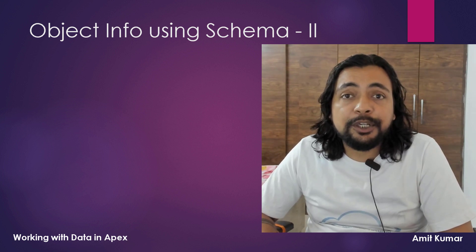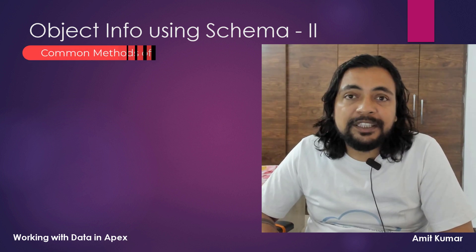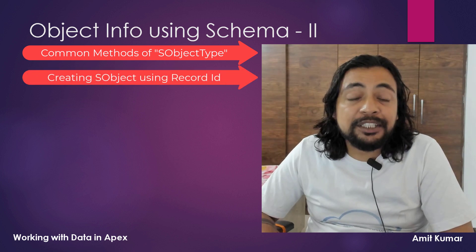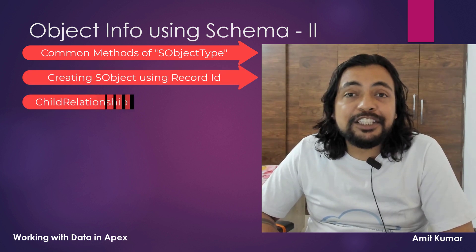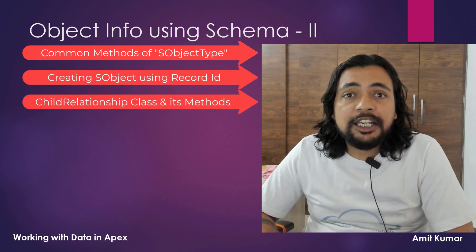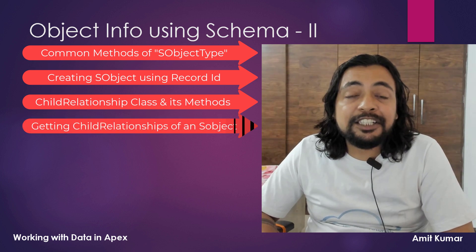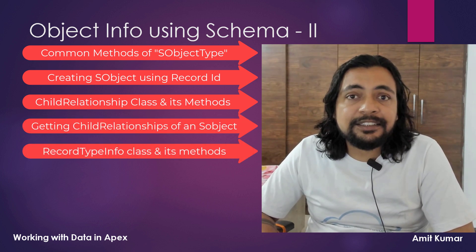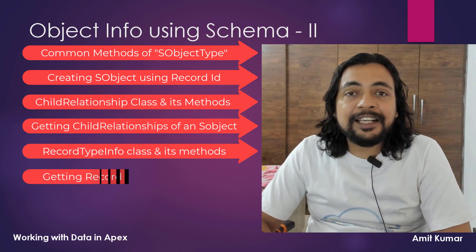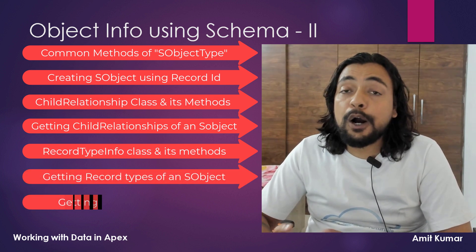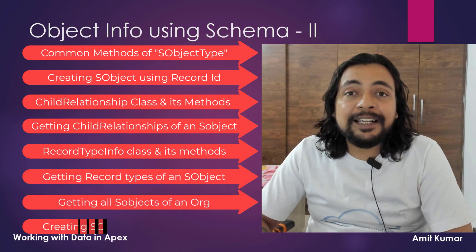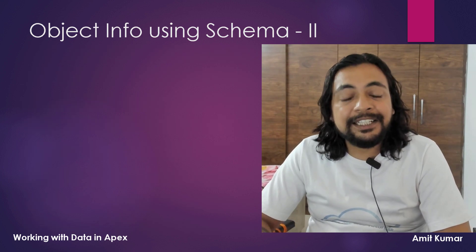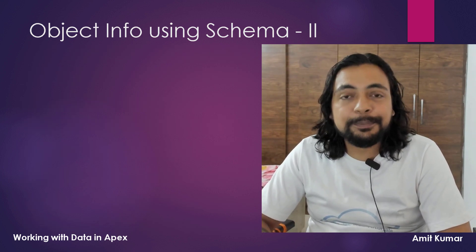Topics we will cover in this video are: common methods of SObjectType class, creating SObject using record ID, ChildRelationship class and its methods, getting child relationships of an SObject, RecordTypeInfo class and its methods, getting record types of an SObject, getting all SObjects of an org, and creating SObject type dynamically. Without wasting any further time, let's proceed with the video.